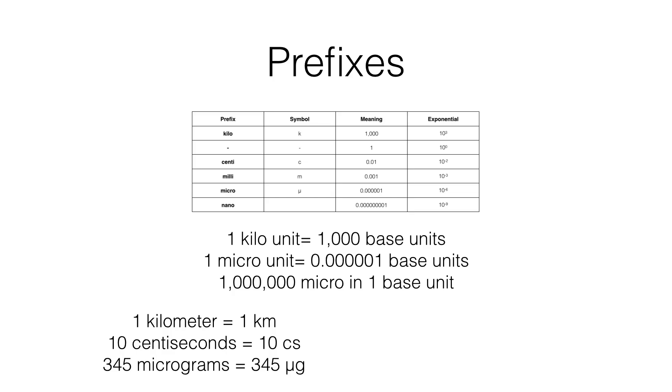Some other relationships that you'll note are one kilogram is a thousand meters. Ten centiseconds is 0.01 second. And 345 micrograms is 0.000345 grams. Of course, there are a wide variety of other combinations, and eventually we'll learn how to convert from one unit to another.